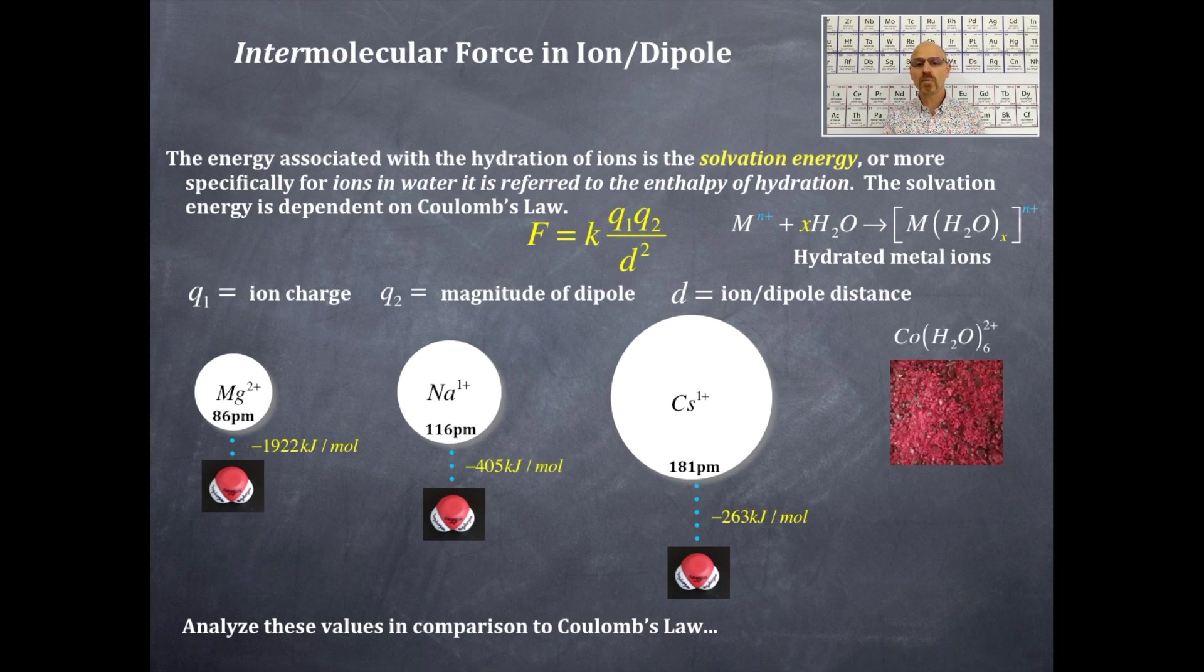And that's, this is cobalt-2, or cobaltous hexahydrate. And it's a solid. It's this beautiful color right there. And then I also have copper-2, that's couperic, and it's a pentahydrate. And that's that beautiful blue color that you see right there. So these are hydrated metal ions.